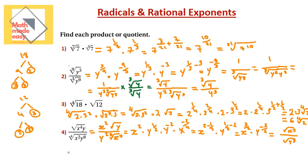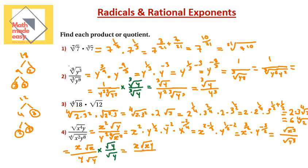Simplifying further: the square root of x cubed is x times the square root of x, and the denominator is y times the square root of y. Since we can't have a radical in the denominator, we rationalize by multiplying numerator and denominator by the square root of y. This gives x times the square root of xy in the numerator, and y times the square root of y squared — which is y — in the denominator, giving y squared. The final answer is x times the square root of x times y, all divided by y squared.